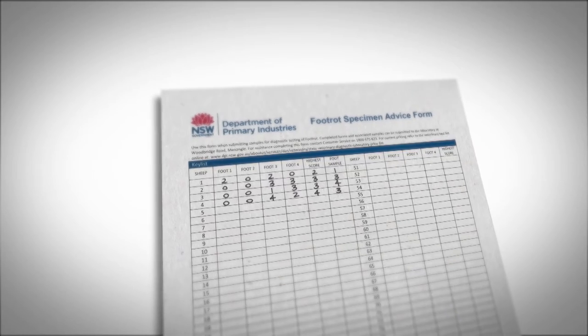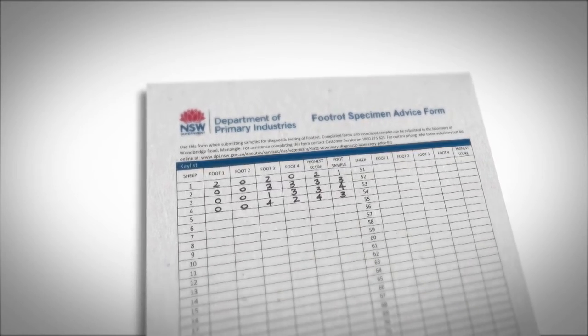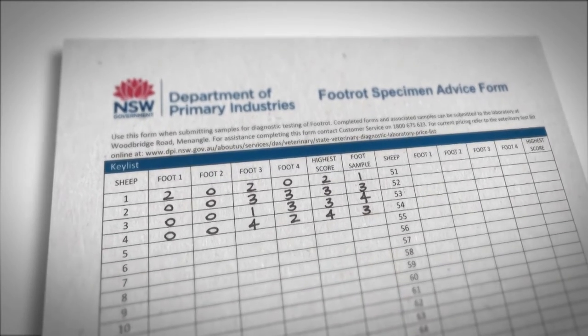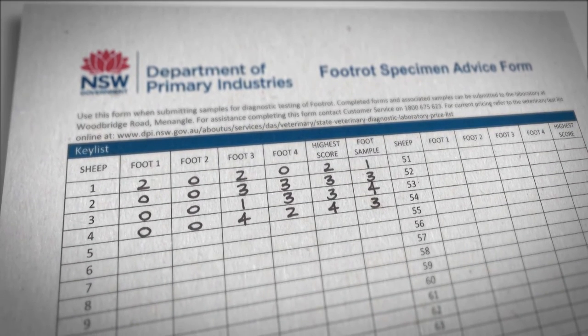It's recommended that all four feet of 100 sheep be examined and given a score from 0 to 5 based on the severity of the lesion. The results are recorded on the foot rot specimen advice form. Lesions from up to 5 sheep can be sampled and submitted for examination. For best results, your samples should arrive at the laboratory no later than 24 hours after collection.